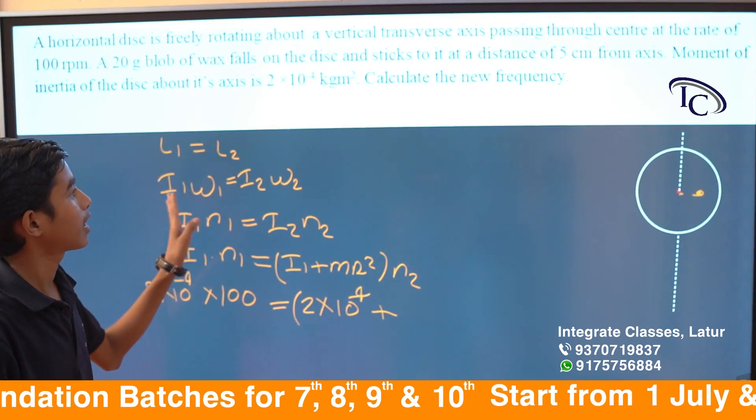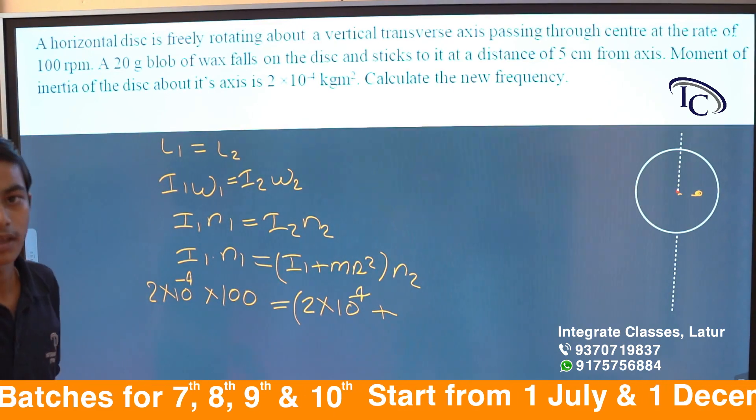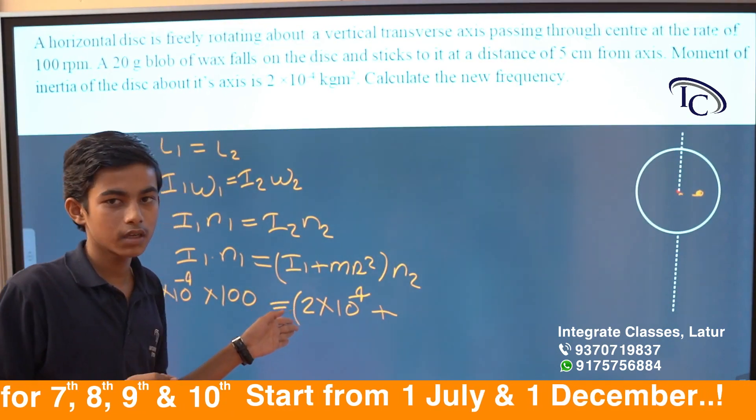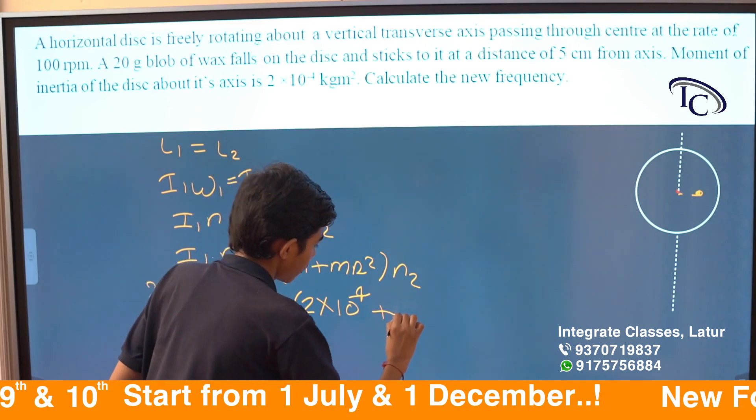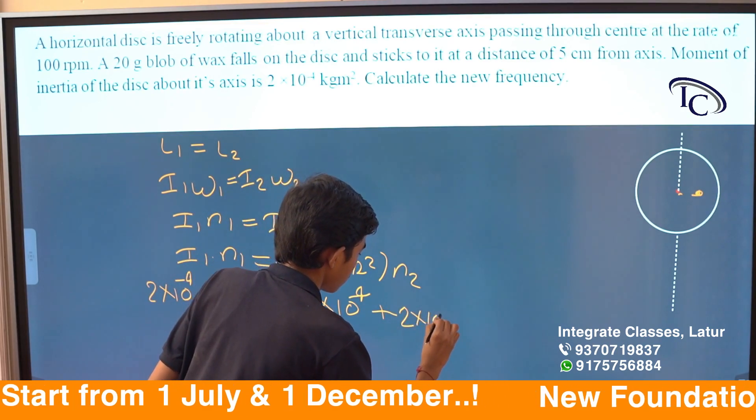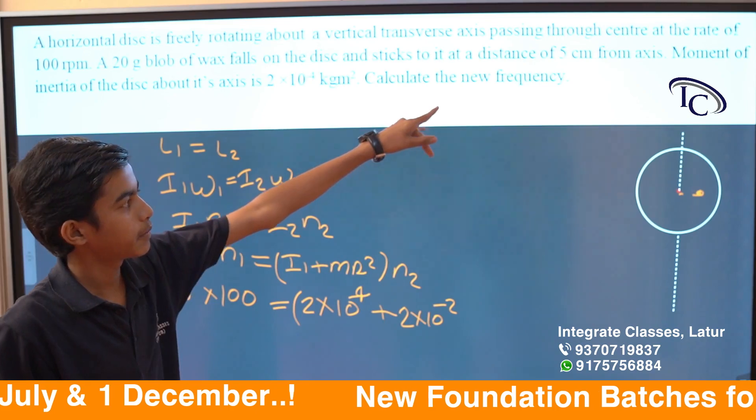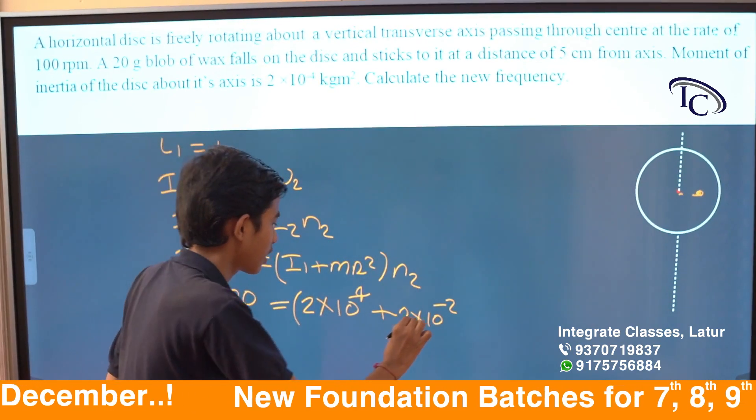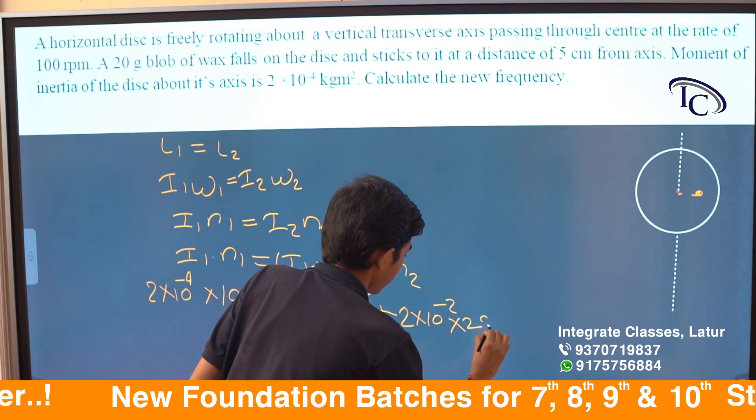Plus M1. M1 equals 20 grams, which is 2×10^-2 kg, into R squared. R is 5 centimeters, so 25×10^-4.